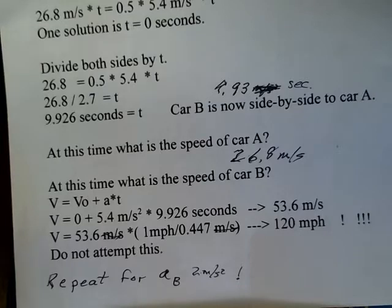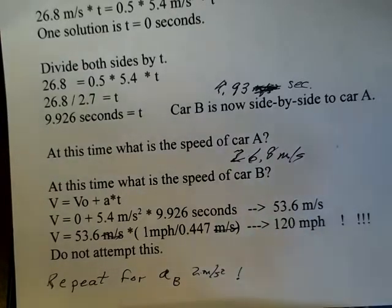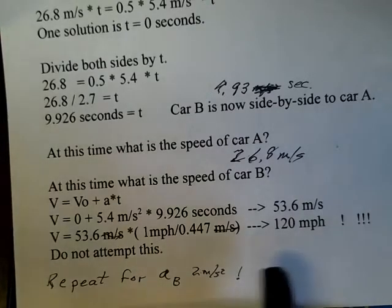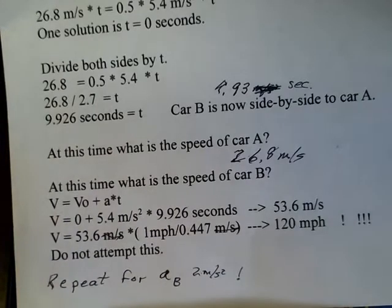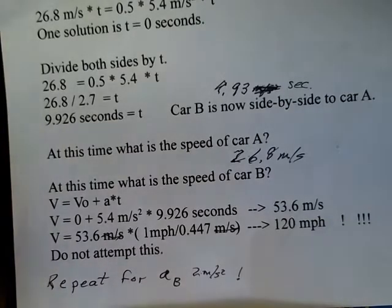I'm glad you paused. And what you found was that the final velocity is still 120 miles per hour. Speed is 120 miles per hour. Well, try it again. 3 meters per second squared or 8 meters per second squared. What you will find is that the final velocity of car B, final speed is always 120 miles per hour.